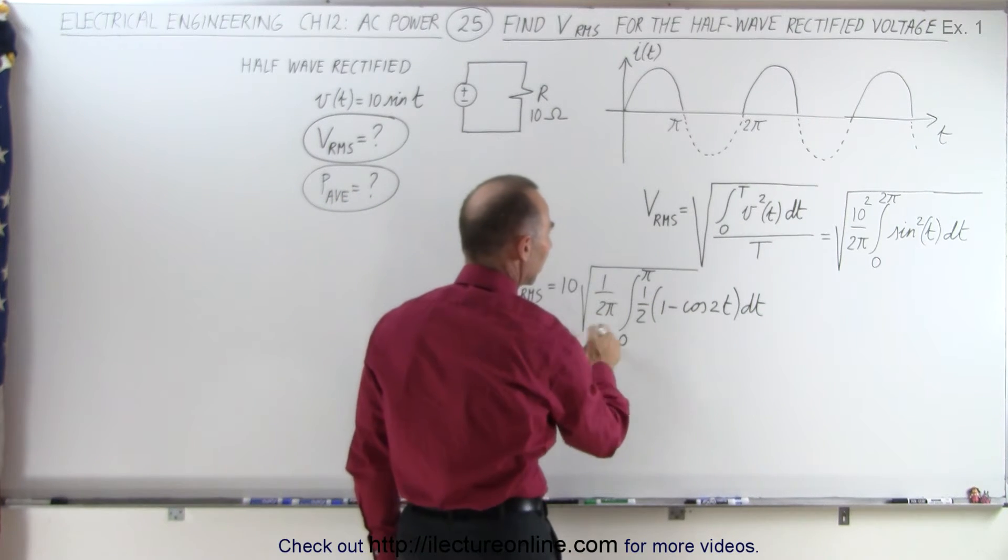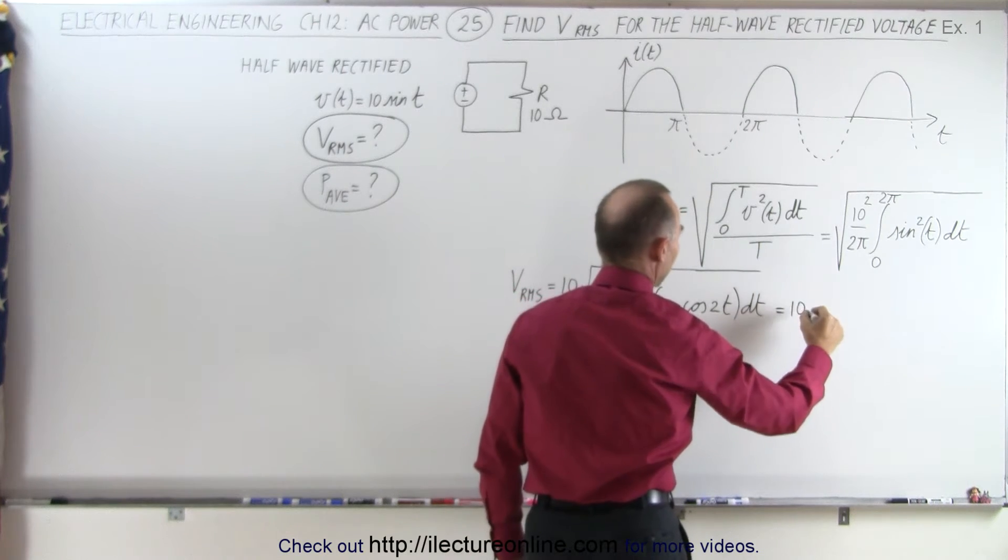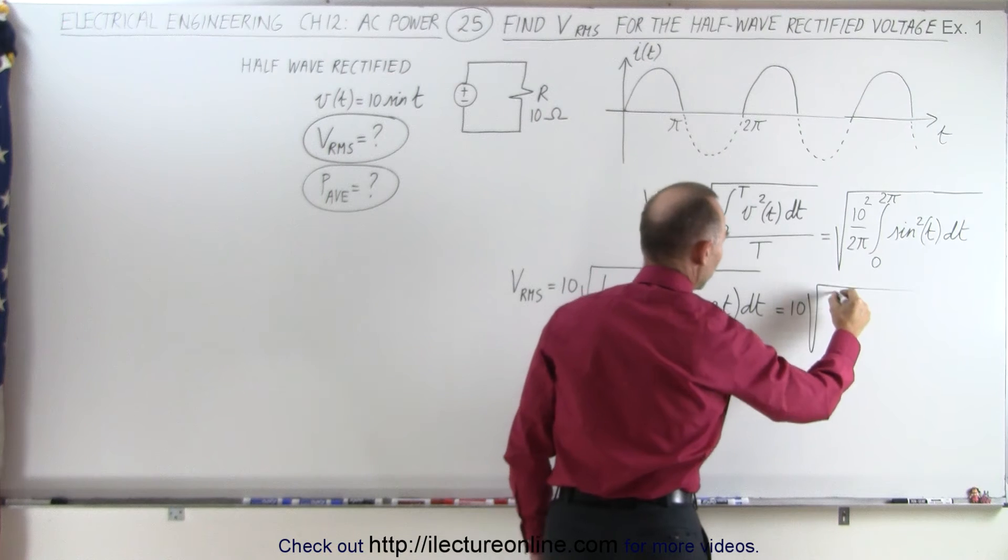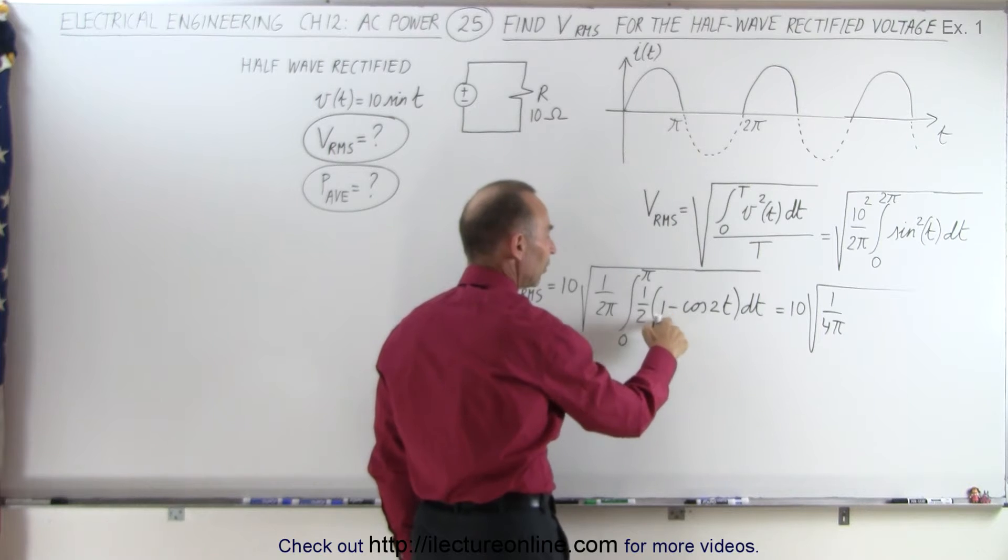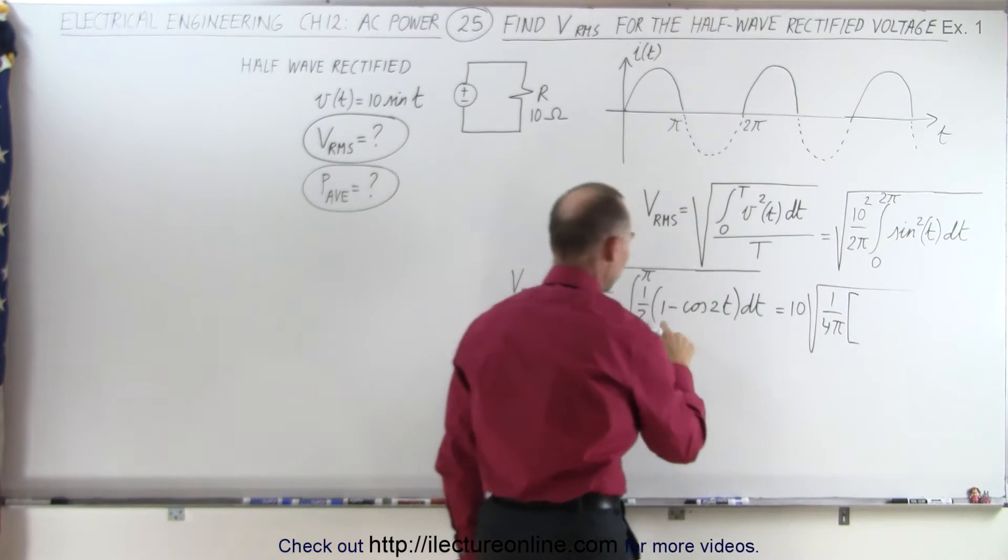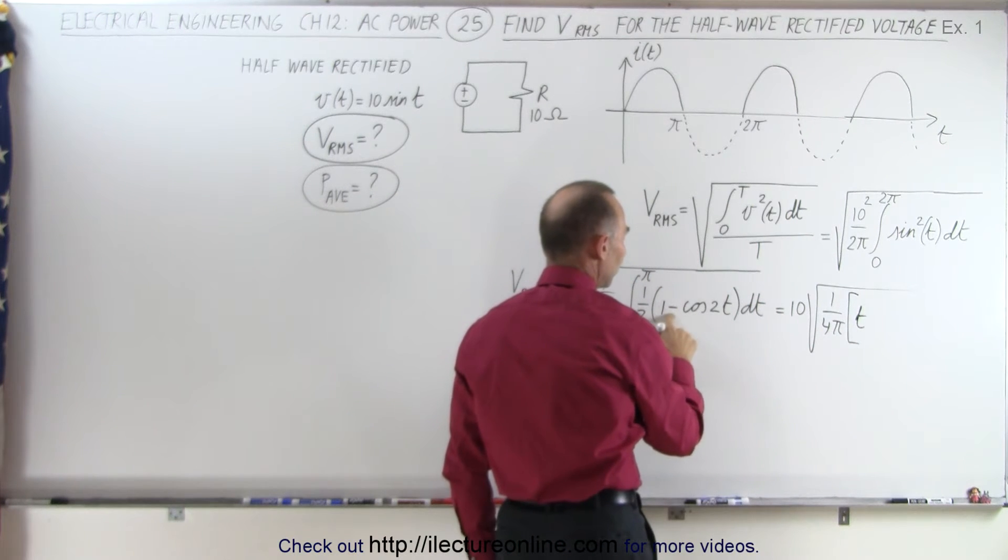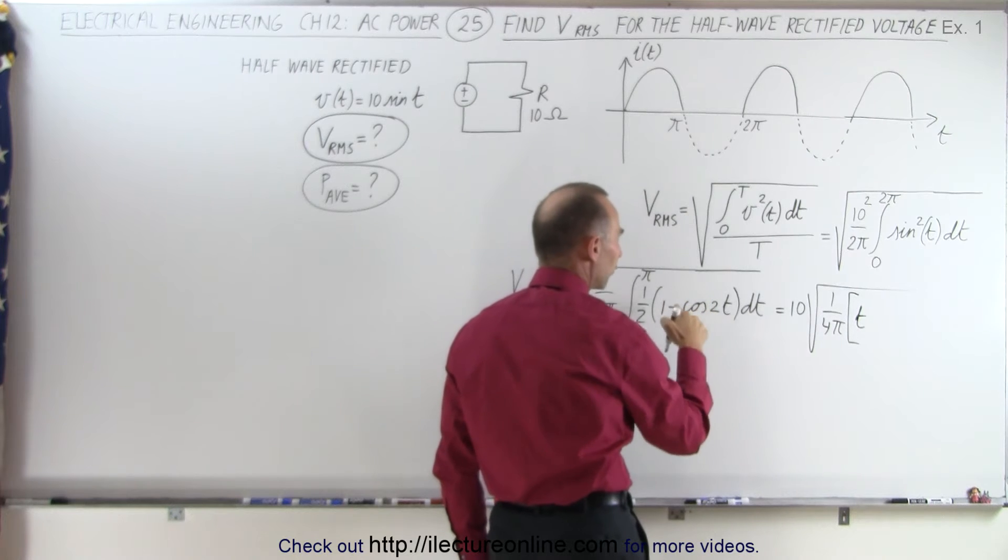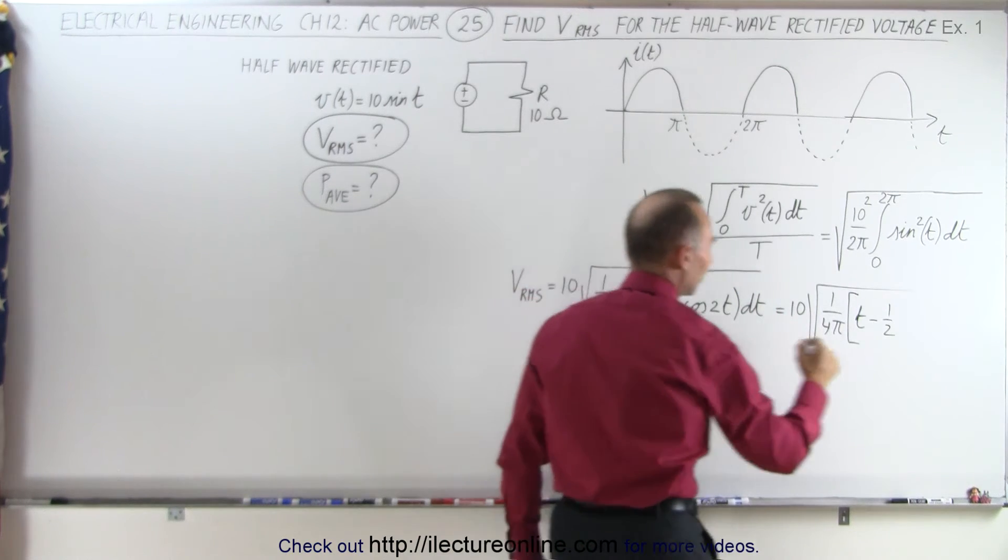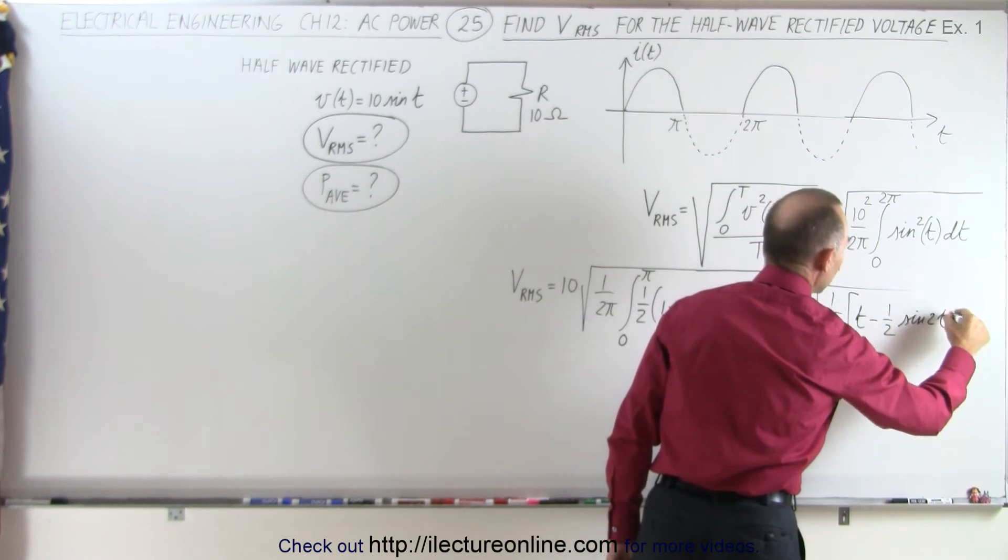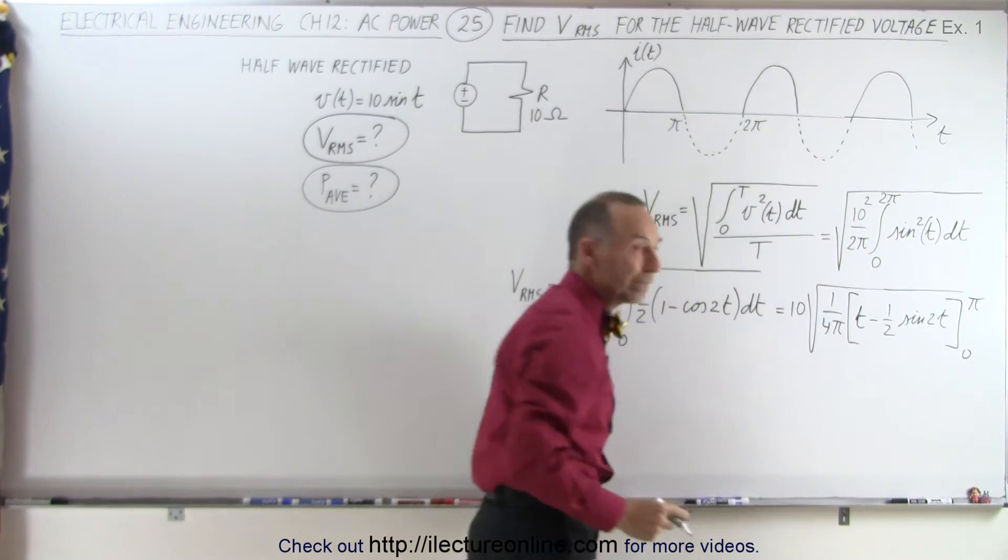Notice the 1 half can come outside the integral. So this is equal to 10 times the square root of 1 over 4π. Simply by taking the 1 half out, we can now integrate this. So this becomes equal to the integral of 1 times dt, which is simply T, and then minus, since we're going to integrate the cosine of 2t, we need 1 over 2. So we have minus 1 over 2. The integral of the cosine is the sine, sine of 2t, and that will be evaluated from 0 to π, only half the period.